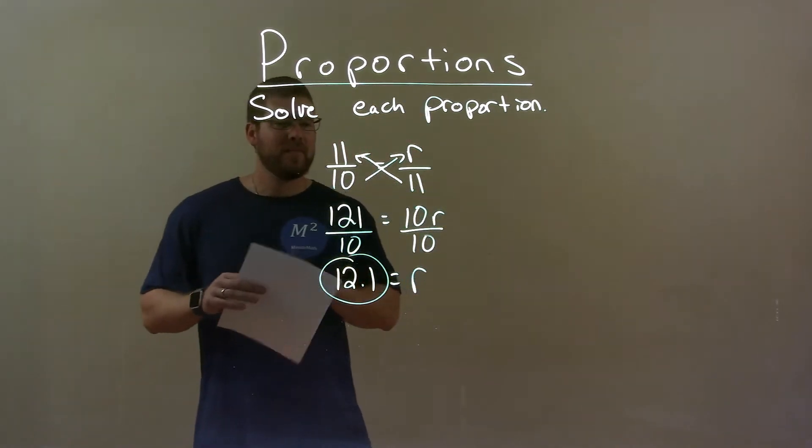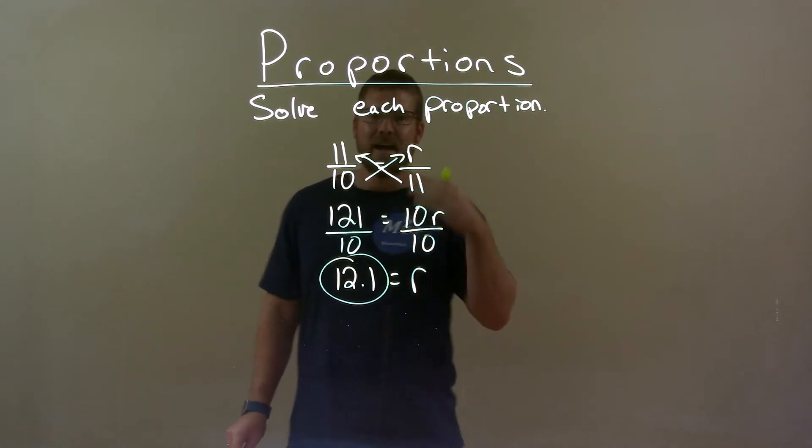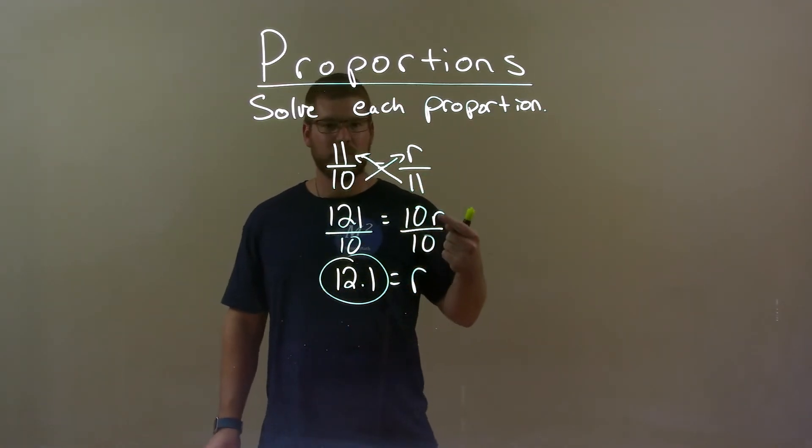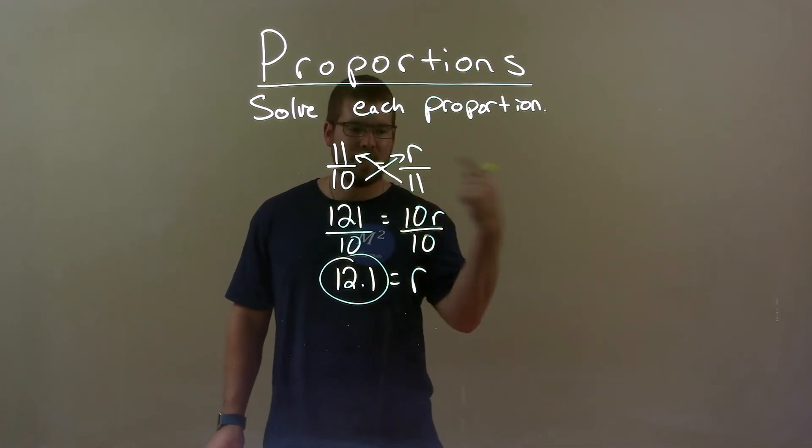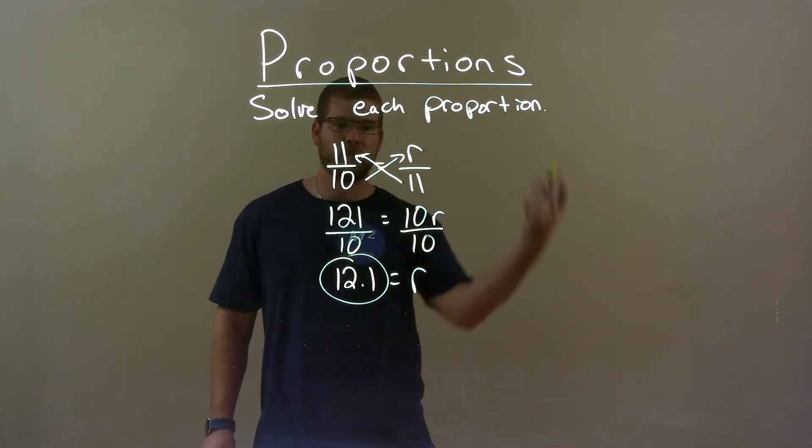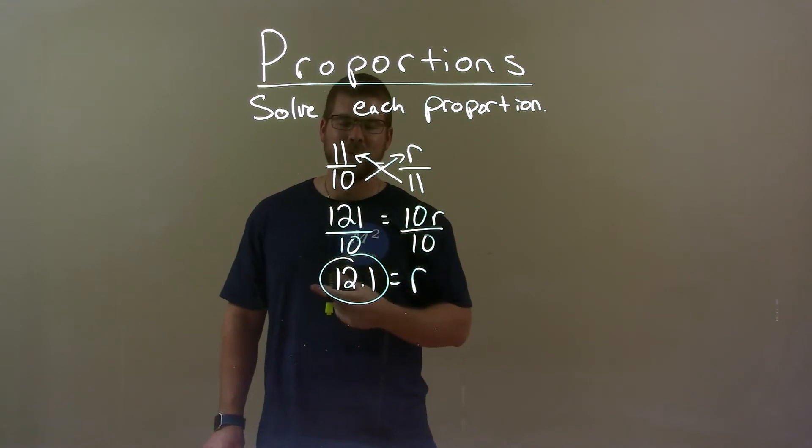Quick recap. We're given 11 over 10 equals r over 11, and we have to solve that proportion. Well, first step, cross-multiply. 121 equals 10r. Then divide both sides by 10. R is by itself equal to our final answer, 12.1.